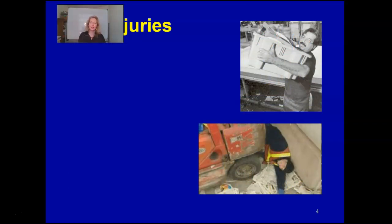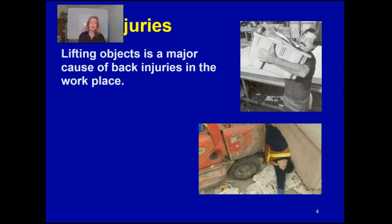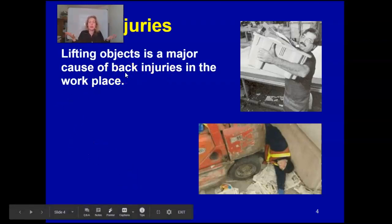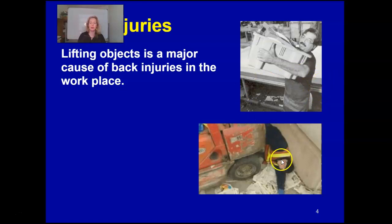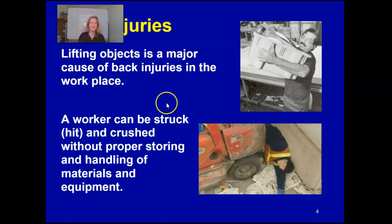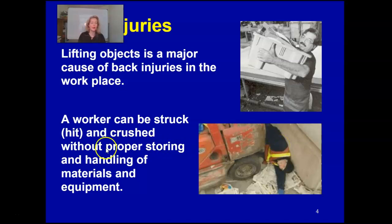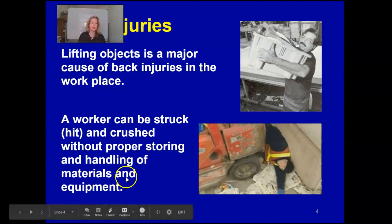What kinds of injuries can happen? Sometimes a back injury. A back injury can stop you from working. Lifting objects is a major cause of back injuries in the workplace — lifting something that is large, bulky, and heavy can injure your back. A worker can also be struck, hit, and crushed without proper storing and handling of materials and equipment.